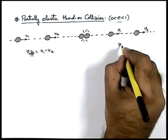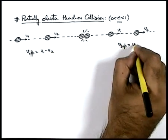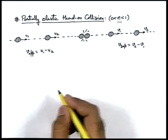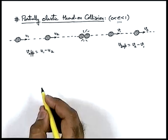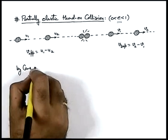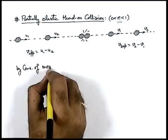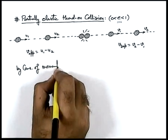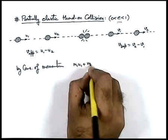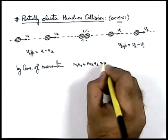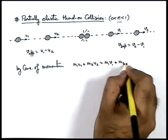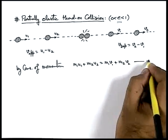After collision, velocity of separation can be written as v-two minus v-one. As no external force is involved, by conservation of momentum, we can use m-one u-one plus m-two u-two is equal to m-one v-one plus m-two v-two. That is equation number one.